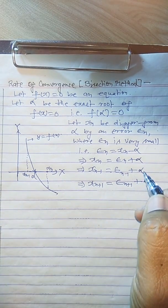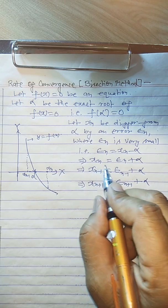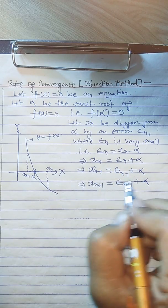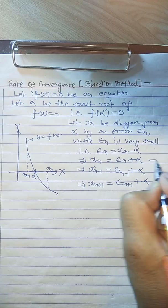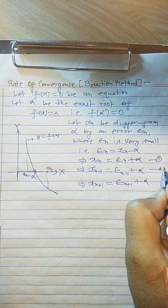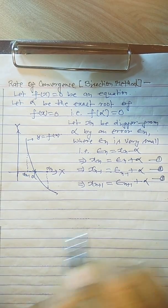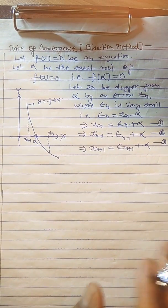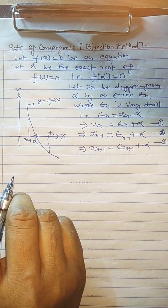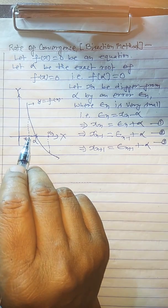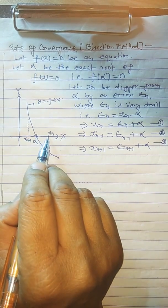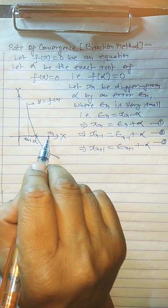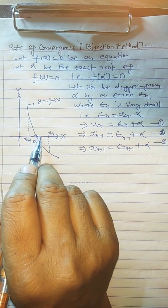Now we have these relations: the value of x_n, x_{n-1} — suppose these are equations 1, 2, and 3. By the bisection method, the root lies between x_{n-1} and x_n, and now we bisect this interval.